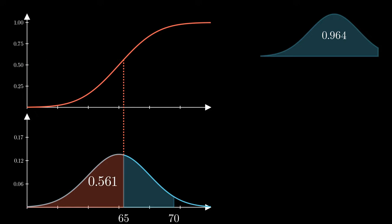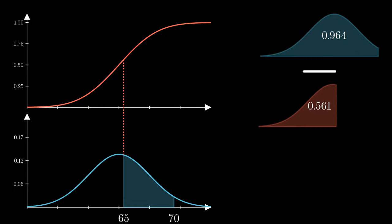And then we're going to subtract that from the area up to 70, and that is going to give us the resulting area for that middle range between 65 and 70. We find that area to be 0.403. That is the area between 65 and 70, the probability.